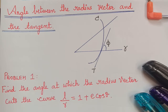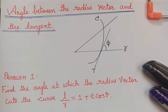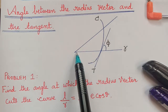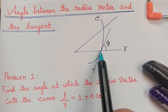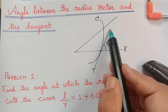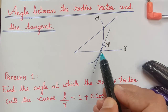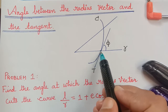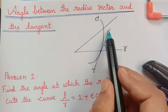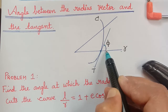Hello students. In this video we will learn about the angle between the radius vector and the tangent for a curve. Here I have considered a curve for which I have drawn the tangent, and this is the radius vector which crosses the curve at this point, and this is the tangent which touches the curve at this point. We are going to find the angle between the radius vector and the tangent, and we take that angle to be phi.